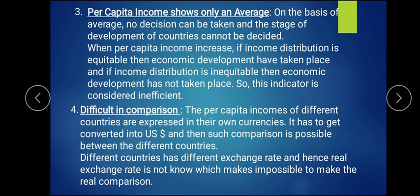To summarize the limitations of per capita income: it does not show the true national income, there is difficulty in calculation, it shows only an average without reflecting income inequality, and it is difficult to compare across countries due to different currencies and fluctuating exchange rates. The remaining two indicators — Physical Quality of Life Index and Human Development Index — will be continued in the next lecture, as they contain a lot of data. You should write notes from this video and memorize the points covered today.